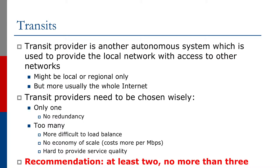We're now going to look at some of the options that network operators or end sites have for multi-homing. First off we're going to look at what a transit provider is and what they do. A transit provider is another autonomous system which is used to provide the local network with access to other networks. They might provide just local transit, they might provide regional transit, but as is most common today they're usually providing transit to the whole Internet.